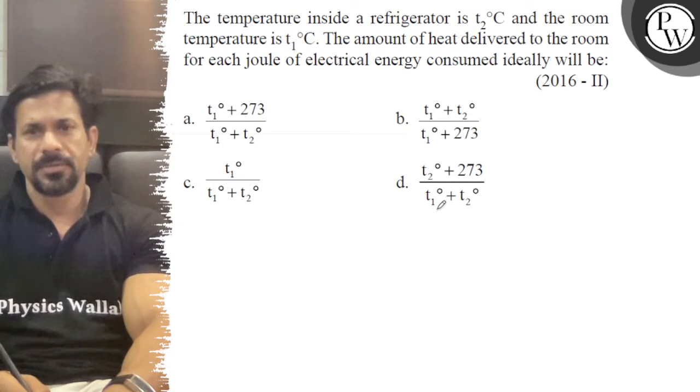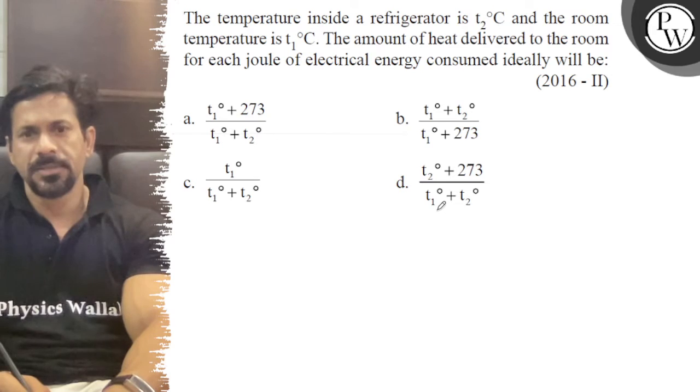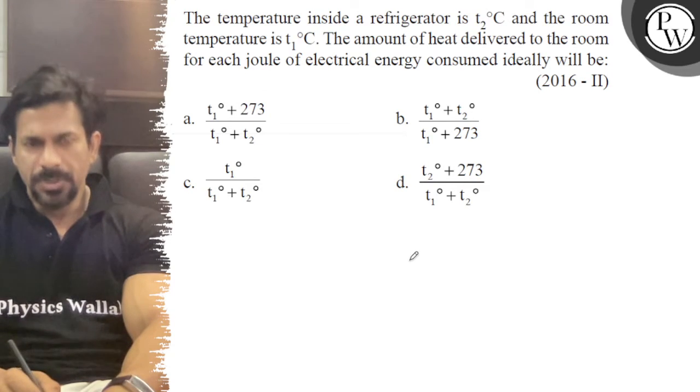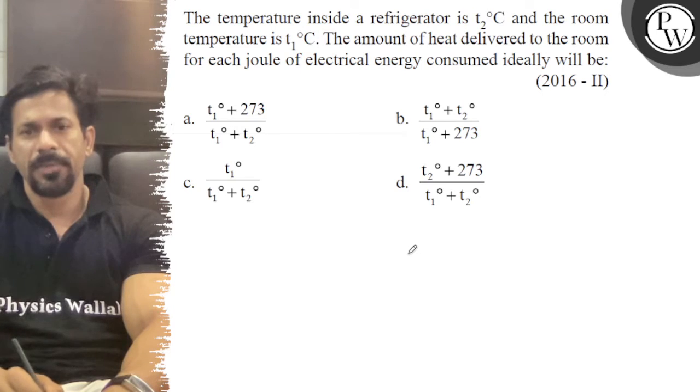The temperature inside a refrigerator is T2 degrees Celsius and the room temperature is T1 degrees Celsius. The amount of heat delivered to the room for each joule of electrical energy consumed ideally will be: